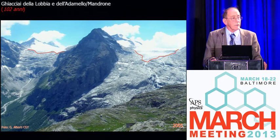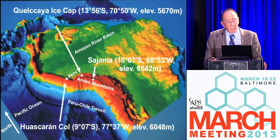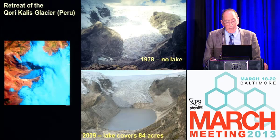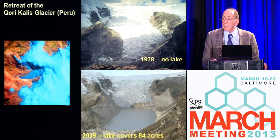If you go to the tropics and look at what's happening to ice in that part of the world — this margin of the Kalkia Ice Cap, the largest outlet glacier, is Qori Kalis. A photo in 1978 and a photo taken in 2009. This lake actually started forming in 1991, now covers 84 acres and is 60 meters deep. 100% of the glaciers in the tropics are retreating in today's world.